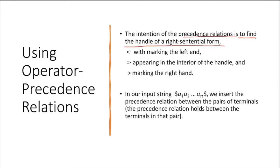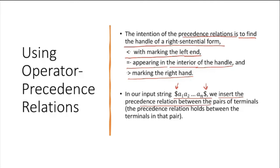The less-than relation marks the left end of a handle, the equals relation appears in the interior of the handle, and the greater-than relation marks the right end. In our input string, both ends are marked with dollar signs, and we insert precedence relations between each pair of terminals.